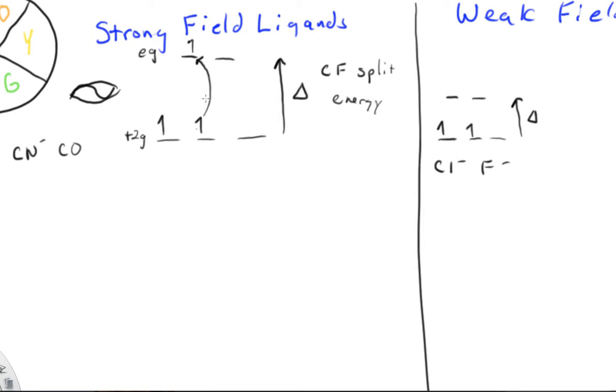But you can see the light absorbed is going to be more than if we were over here with a weak-field ligand. This electron would absorb less light to be excited.